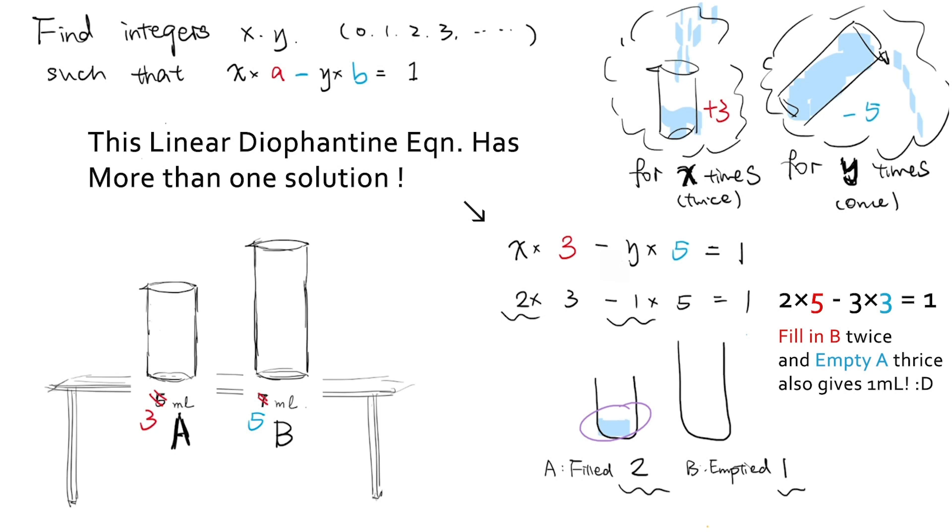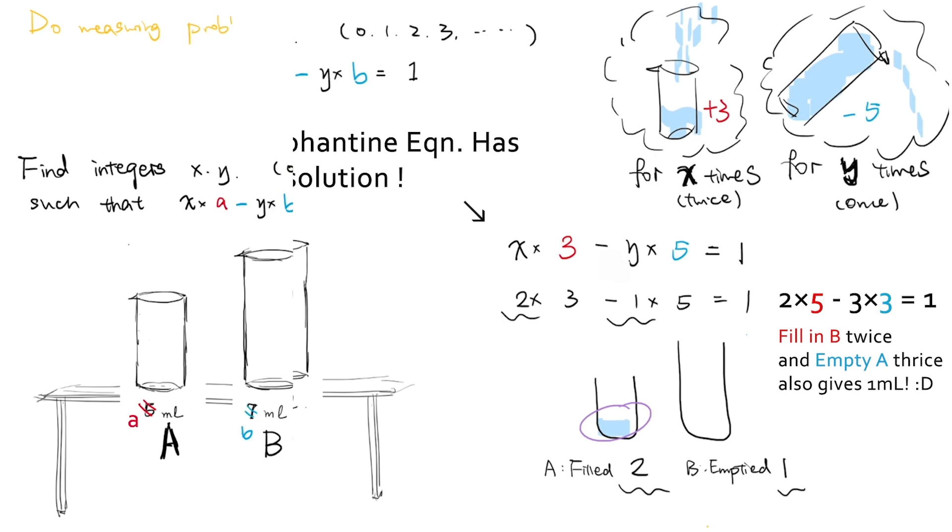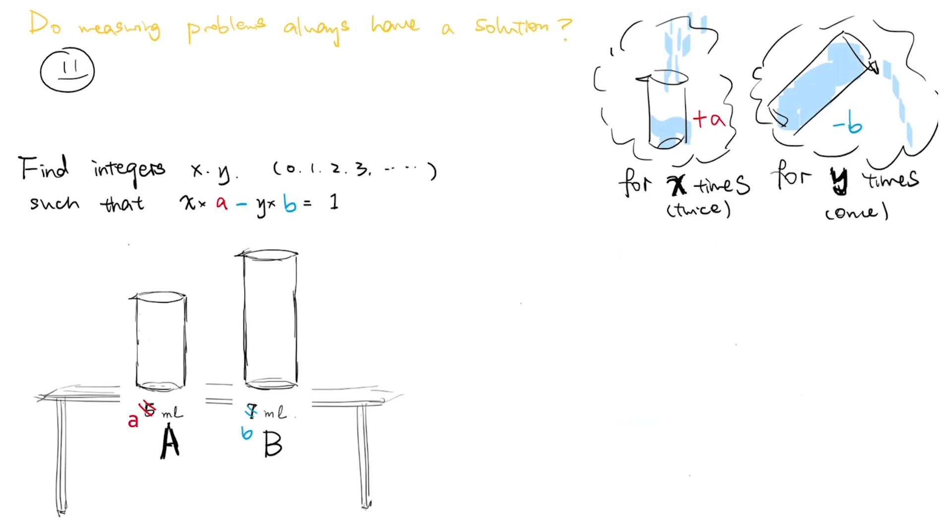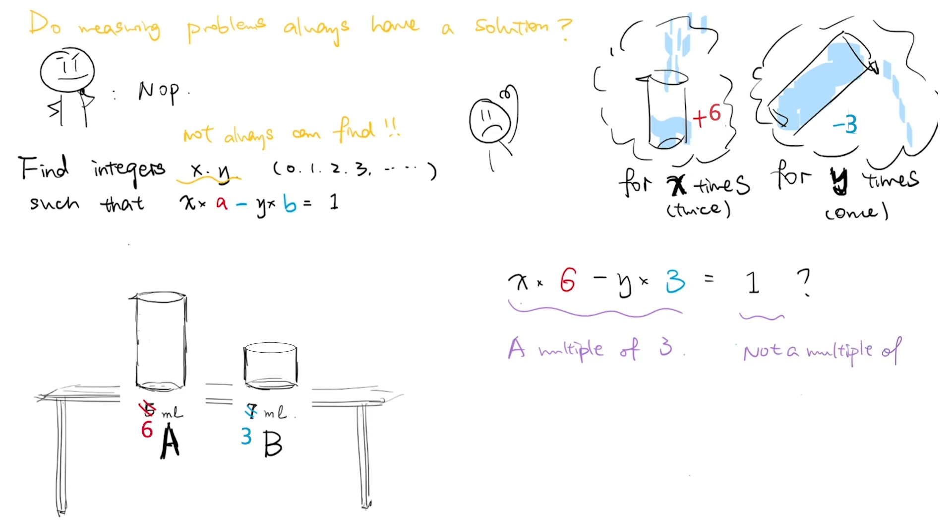We had explored how solutions to linear Diophantine equation can solve our measuring problem, but do measuring problems like this always have a solution? In fact, no, it's not always the case that we can find such integers to satisfy the Diophantine equation. For example, if you are given two beakers of size 6 and 3, you cannot measure 1 milliliter of water no matter how hard you try. With A equals to 6 and B equals 3 in the Diophantine equation, we have x times 6 minus y times 3 is equal to 1. But there are no integers x and y that satisfy this equation, since the left-hand side of the equation is always a multiple of 3, but the right-hand side 1 is not.